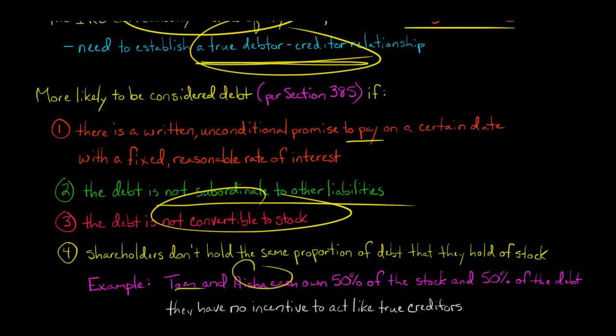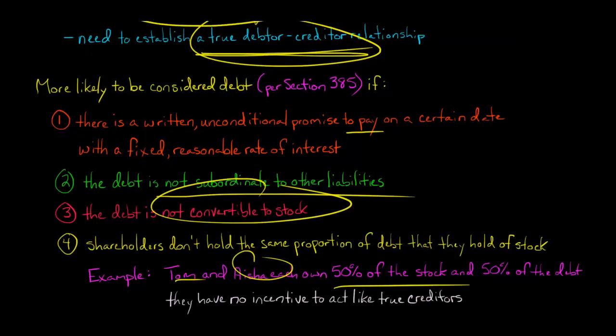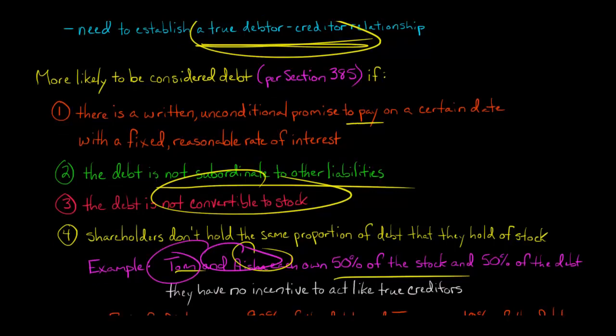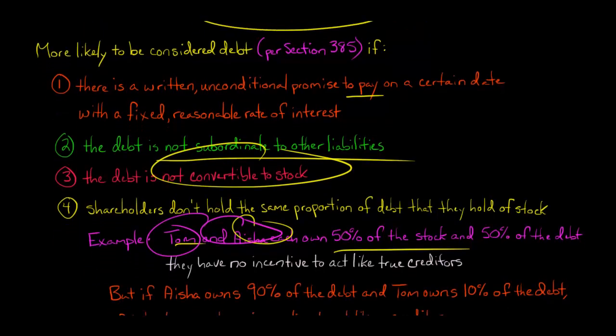Let me give an example. Tom and Aisha each own 50% of the stock in a corporation and each hold 50% of that corporation's debt. The corporation owes half to Tom, half to Aisha, but also half of its stock is owned by each of them. They don't have any incentive to act like creditors here. Why? Well, if the company were to go under, they're both going to get half of whatever happens. So it's not like the debt really matters.